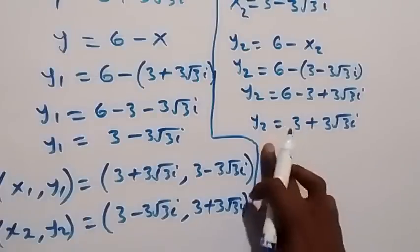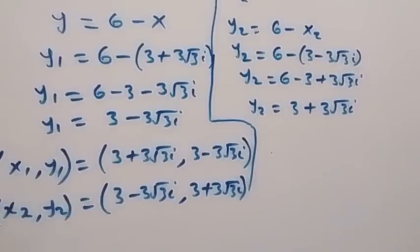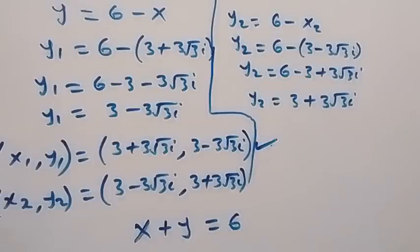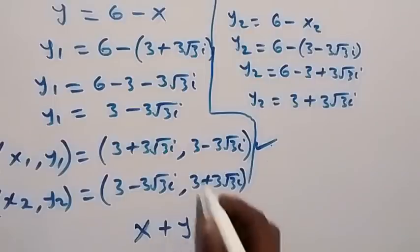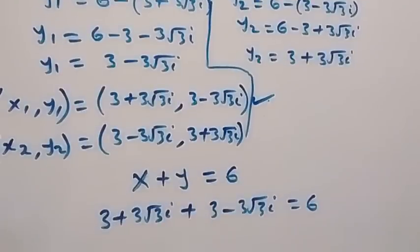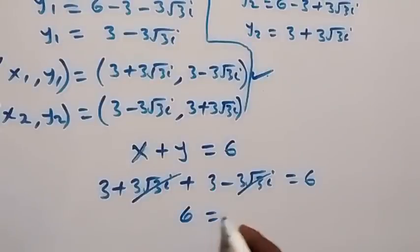Then we can check just one of the solutions. From equation 1, what we have is x plus y equals to 6. Let's check with the first one: x plus y, that will be 3 plus 3 root 3 i, plus 3 minus 3 root 3 i. The plus 3 root 3 i and minus 3 root 3 i cancel out. Then we have 3 plus 3 left here, which is 6. So 6 is equal to 6. And this satisfies the given problem.